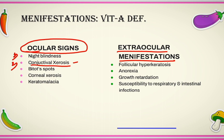Some slight wrinkling can also be present in the conjunctiva. The third condition is Bitot's spots — these are triangular, dry, foamy, whitish lesions which are mostly located in the temporal region of the eyes. The fourth condition is corneal xerosis, which is the dryness and cloudiness of the corneal part of the eye.